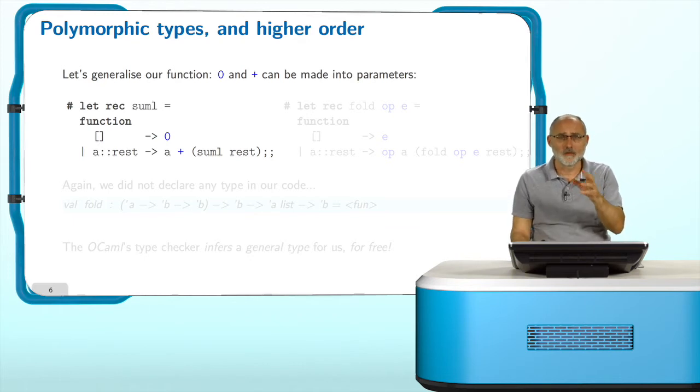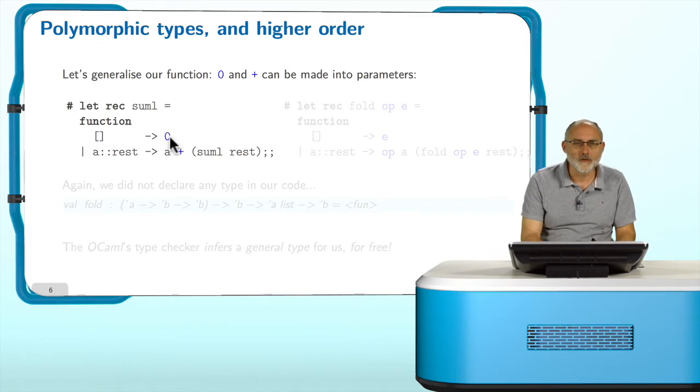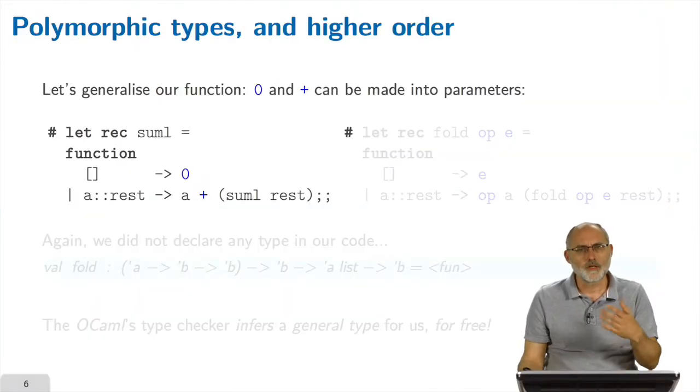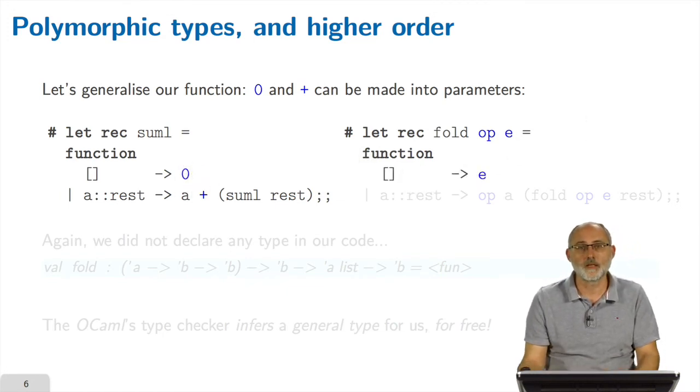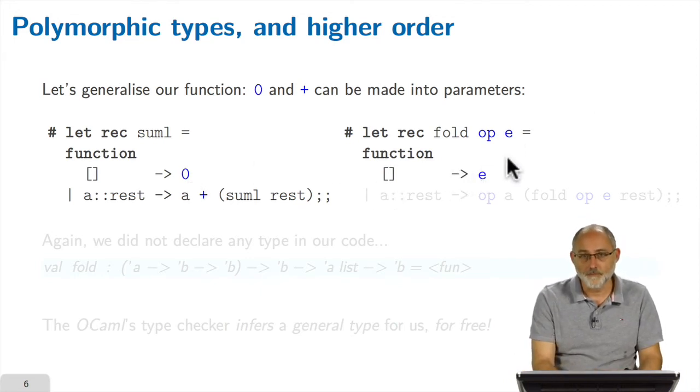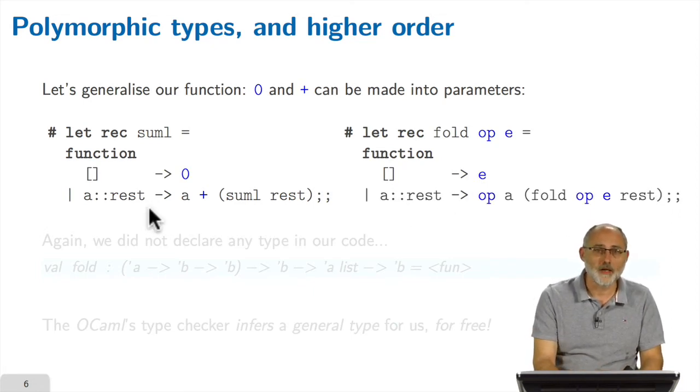So we have written our nice function, sumL, the sum of the elements of the list. But if you look at the code actually in this zero here and plus there, they can be just parameters of the function, just keeping the same structure of the function here. So let's try to turn them into parameters and see what happens. So I will rewrite the function, give it a new name. Let's call it fold now. It has two extra parameters. Op, which will play the role of this plus operator here. And e, which will play the role of the result returned for the empty list. It's again the definition of the function. It is defined by cases. On the empty list, instead of zero, I will return this e here. And on the non-empty list here, I was taking a plus the result of recursive call of the function. Here I will apply the operator op to a and the result of the recursive call. So basically it is exactly the same structure of the function, but I have turned op and e into parameters of the new function fold.